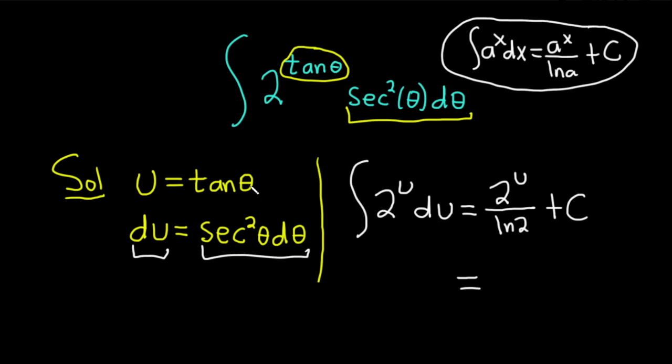This is equal to, well u is equal to the tangent of theta. So this is 2 to the tangent of theta over the natural log of 2 plus our constant of integration capital C.